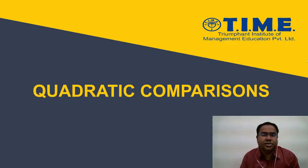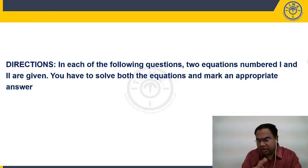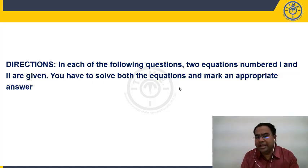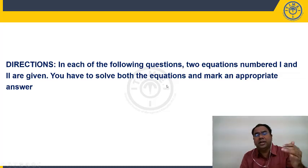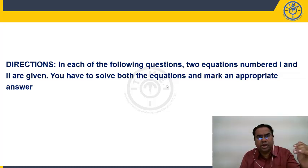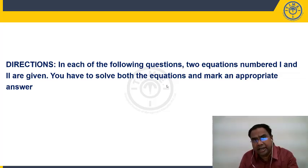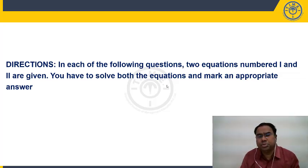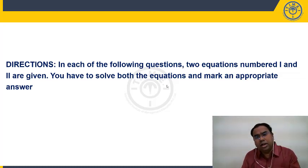Let us look at the directions for solving these Quadratic Comparison questions. Each of the following questions gives two equations numbered 1 and 2. You have to solve both equations and mark an appropriate answer. The options are: X greater than Y (first option), X less than Y (second option), X greater than or equal to Y (third option), X less than or equal to Y (fourth option), and if X and Y are equal or you cannot establish a relationship, mark the fifth option.